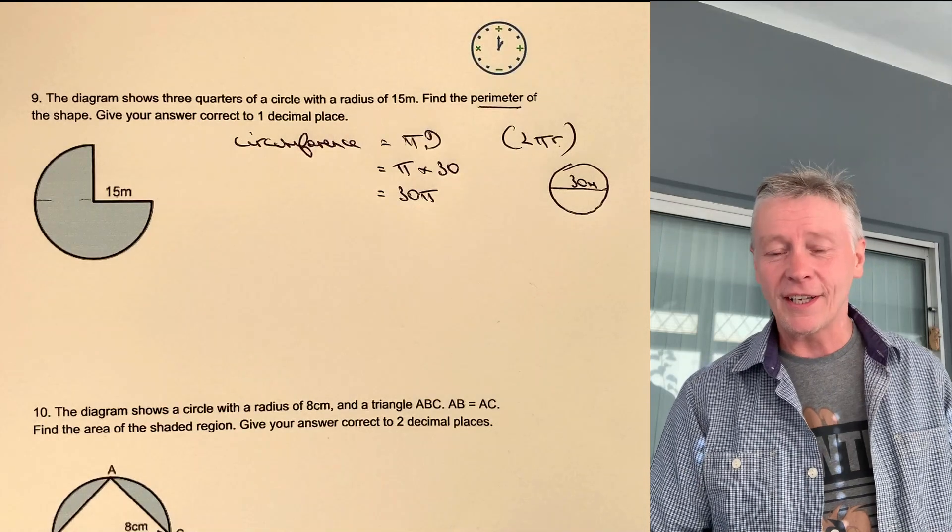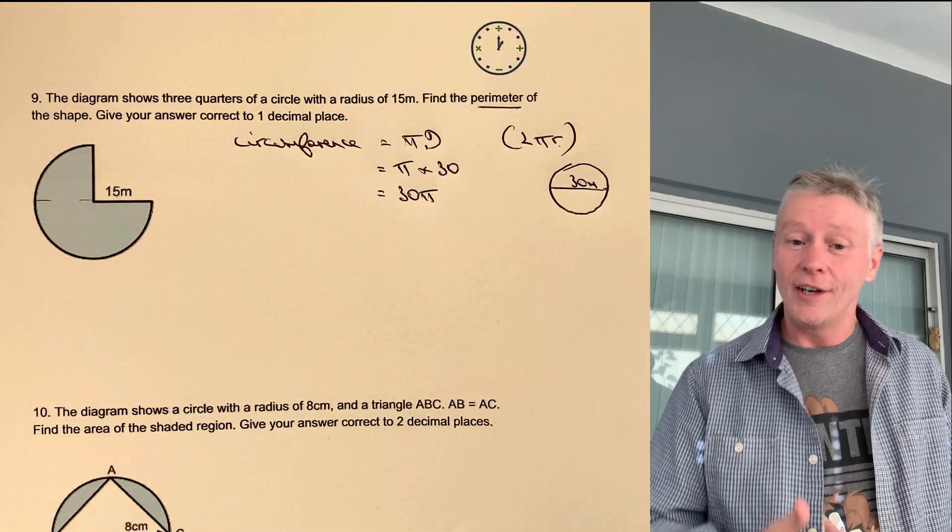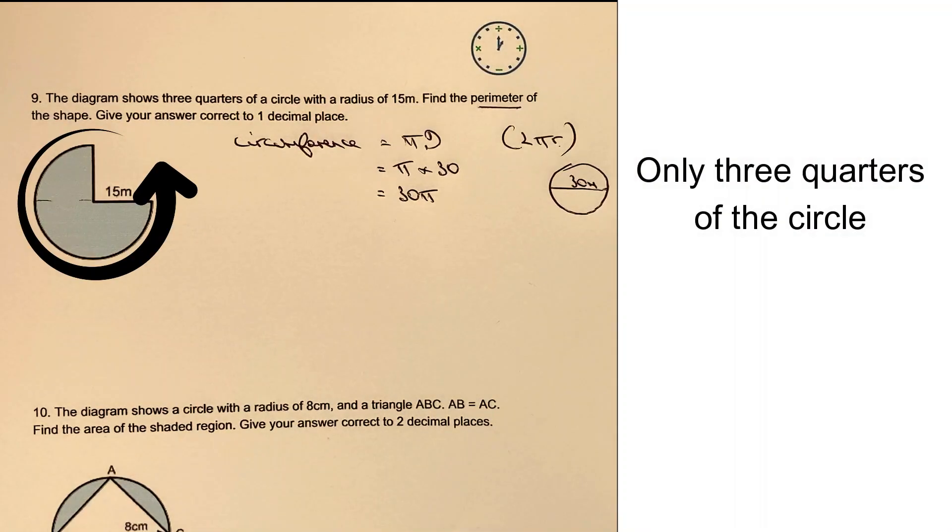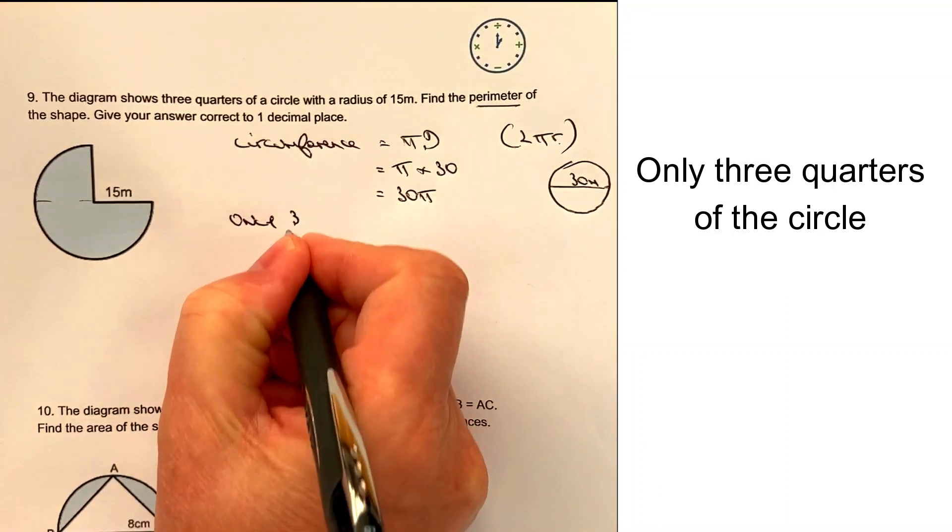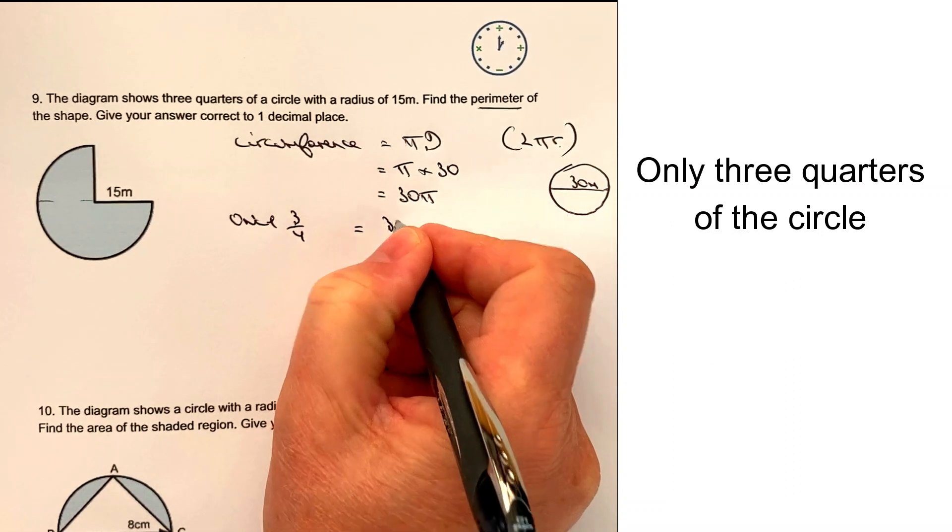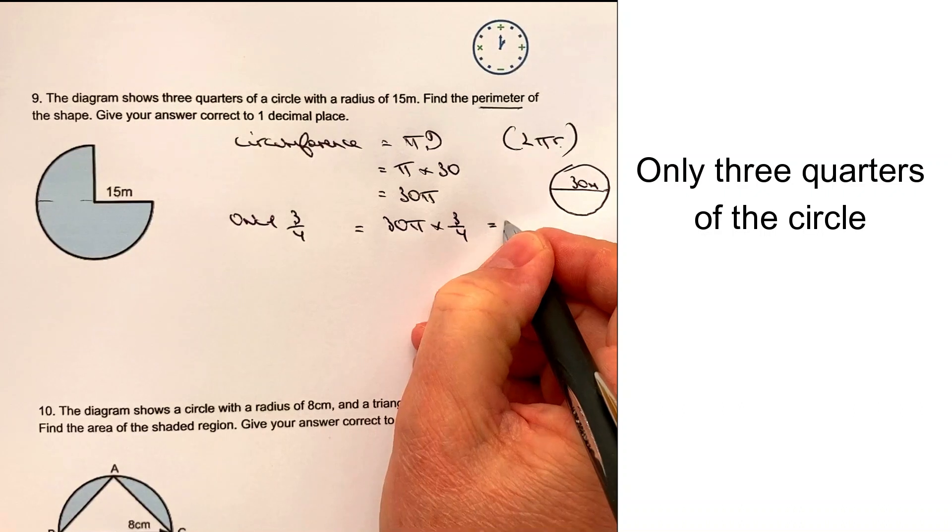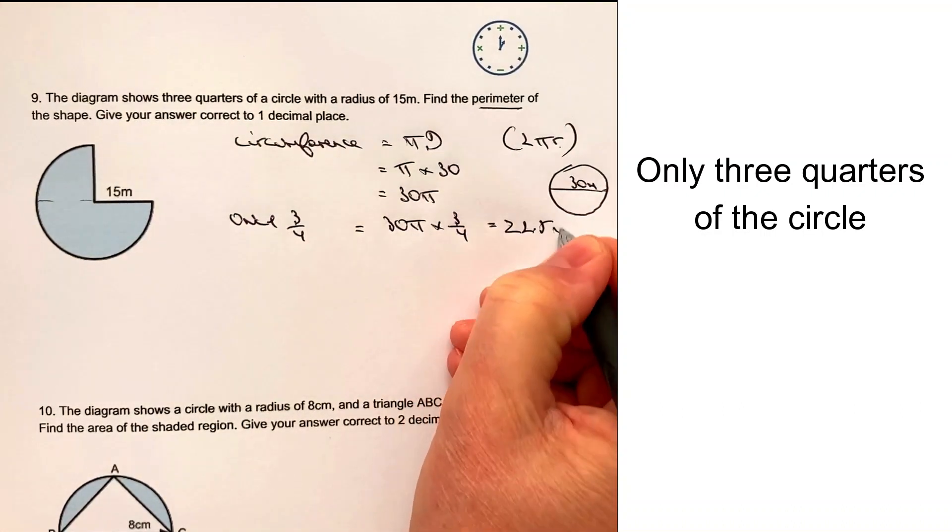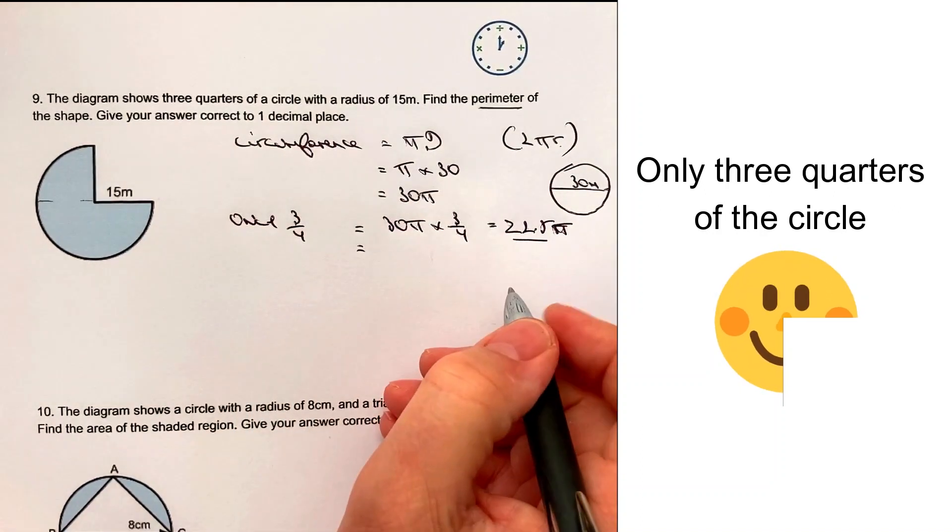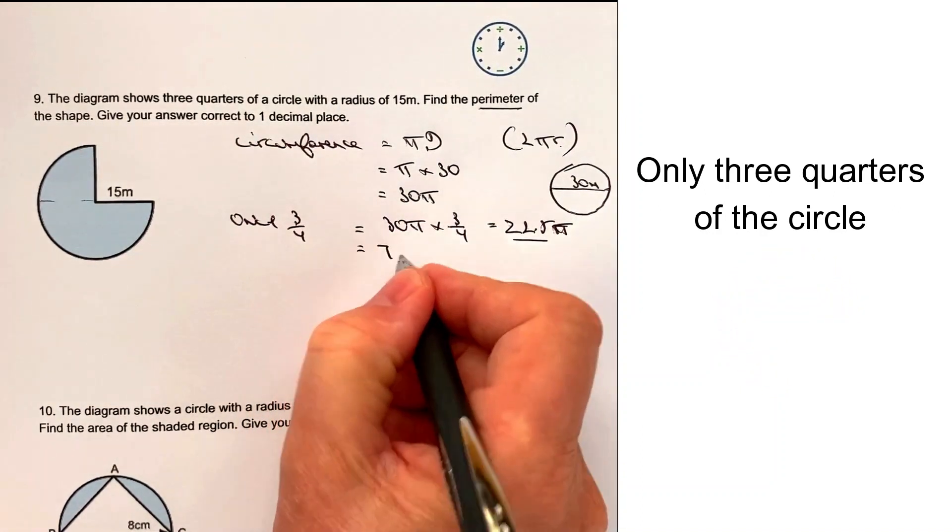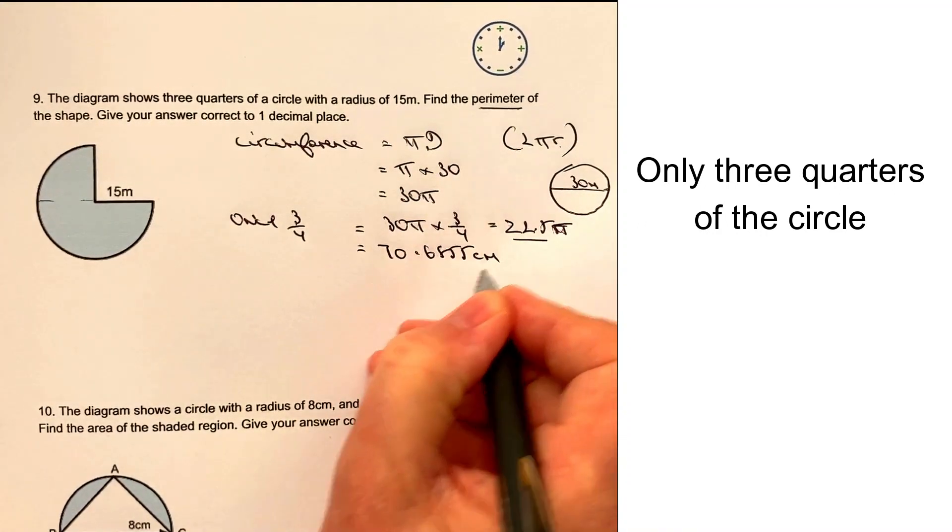Now, in this particular case, we've got three-quarters of a circle. So we're going to do three-quarters of 30π. And the way that's going to work is that if it's only three-quarters, it's going to equal 30π multiplied by three-quarters, which is going to equal 22.5π. I'm sorry about my awful writing, but if I pop 22.5π into a calculator, I'm going to get 70.6855 centimetres.